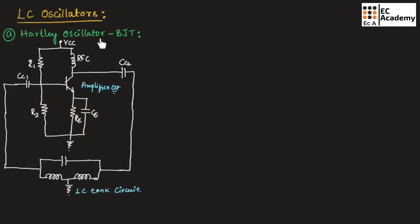Now let us understand the Hartley oscillator using BJT. The oscillator consists of an amplifier circuit as well as a tank circuit. The difference between the Hartley and Colpitts oscillator is that in the Hartley oscillator's tank circuit, there is one capacitor and two inductors connected in parallel, named C, L1, and L2. In the Colpitts oscillator, the tank circuit has two capacitors and one inductor.